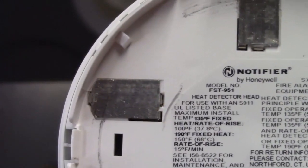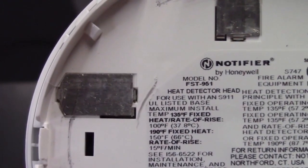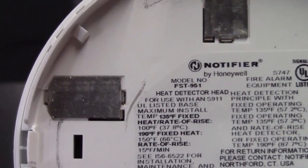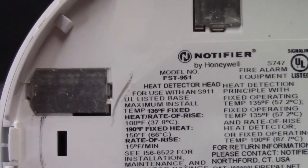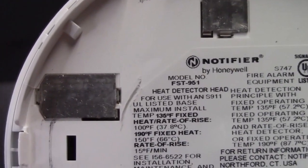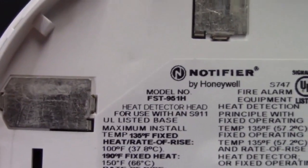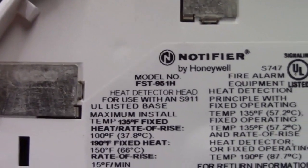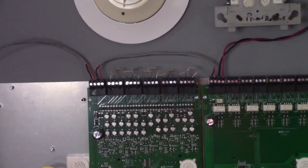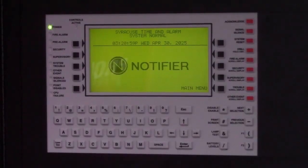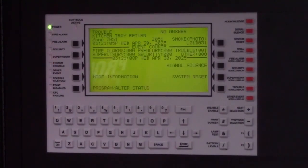This one here is the FST951, which is 135 degrees fixed temperature. If there was an R at the end of that number, it would be rate of rise. This is the FST951H, which is the 194 degree heat detector. So it is important to select the correct detector. The first step is to remove the smoke detector and replace it with a heat detector. Make sure you dial it to the correct address.